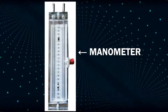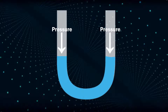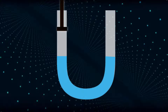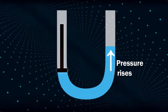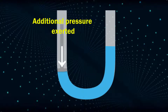The instrument used to measure the difference in liquid pressure is called a manometer. Let's take a U-shaped tube and fill it with water. In the beginning, since pressure is the same at both ends, the water level will be the same. Now apply some pressure on one side, and you will see the water level on the right side will rise. By measuring the height difference between the two ends, the additional pressure exerted can be calculated easily.